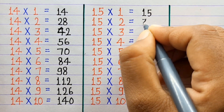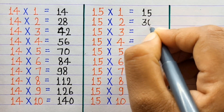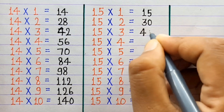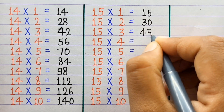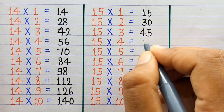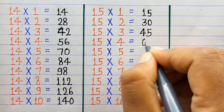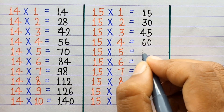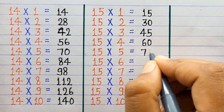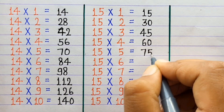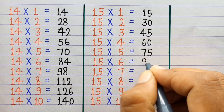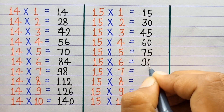15×1=15, 15×2=30, 15×3=45, 15×4=60, 15×5=75, 15×6=90.